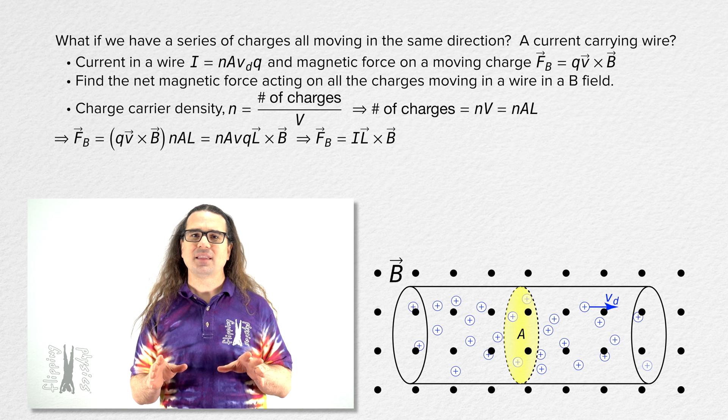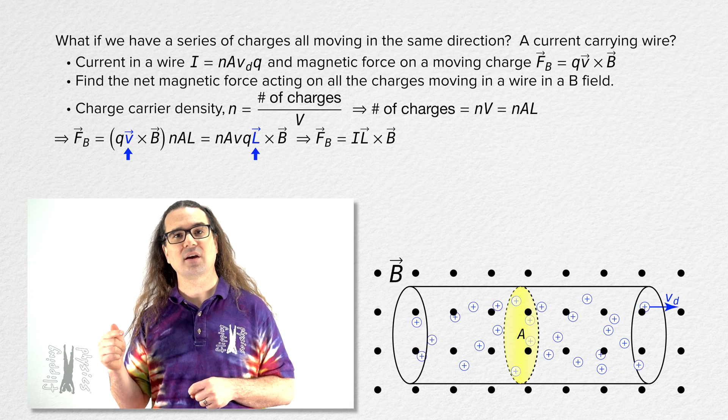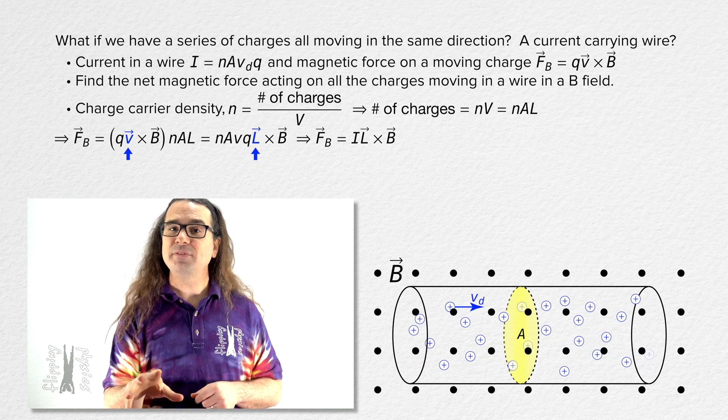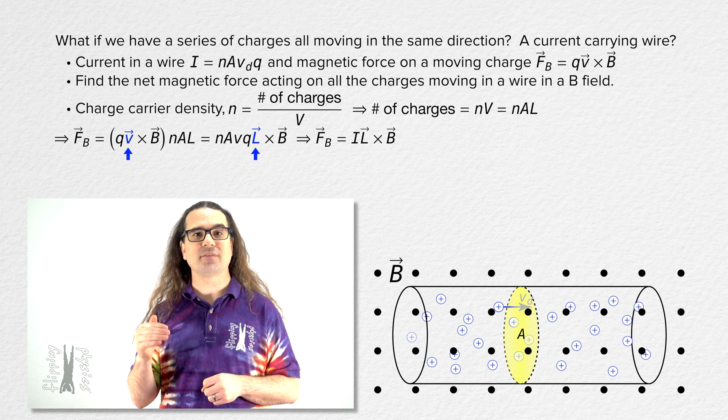I will point out that we did move the vector symbol from the drift velocity of the charge carriers to the length of the wire. I was about to ask that! Hopefully, you recognize that the direction of the average velocity of the charge carriers and the direction of the wire are the same.